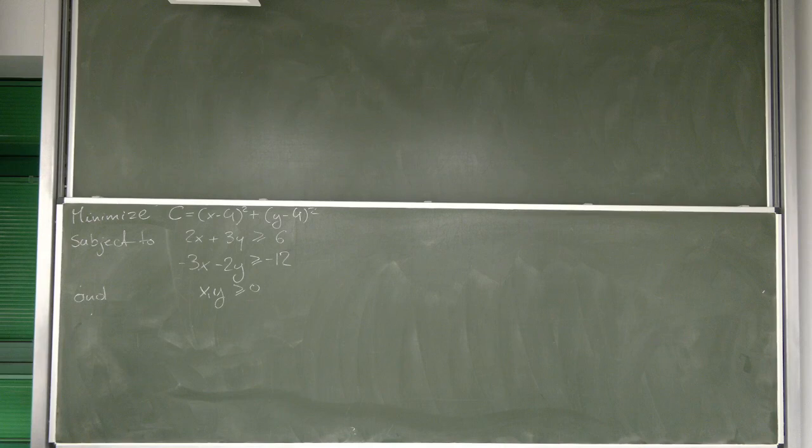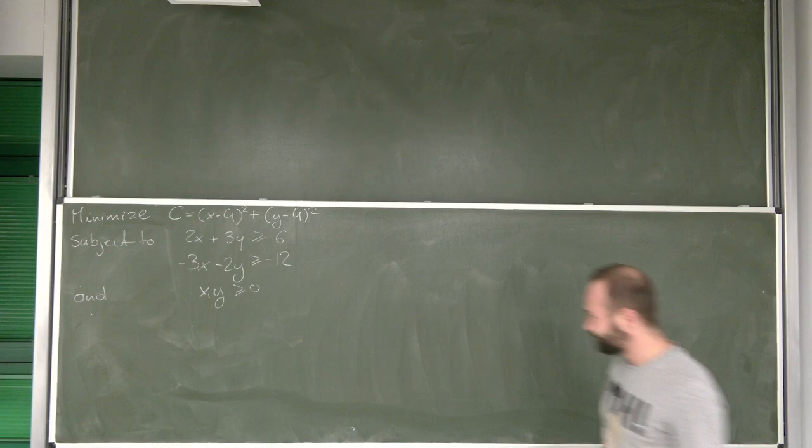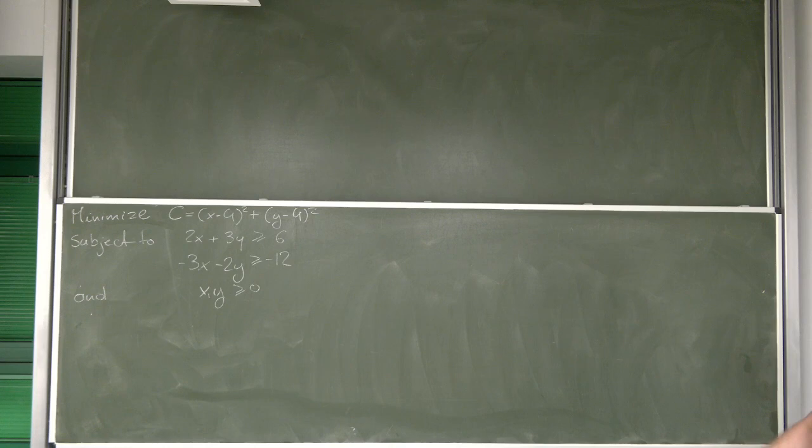Hi. Now that we've dealt with maximization problems, let's do one where we need to minimize a function subject to two conditions and of course a negativity restriction.